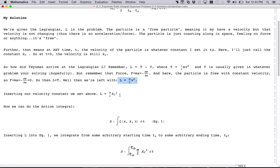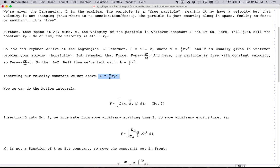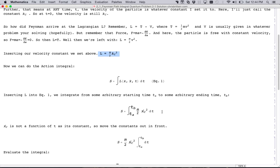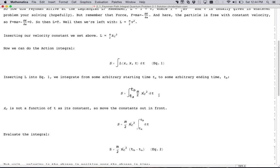We insert our velocity constant. We get this and we can put that into the action integral right here. And I integrate from some arbitrary starting time to some arbitrary ending time. And I have my velocity constant in there.